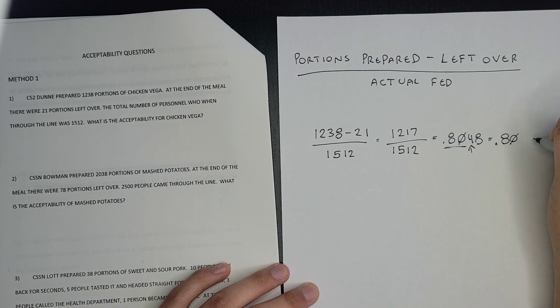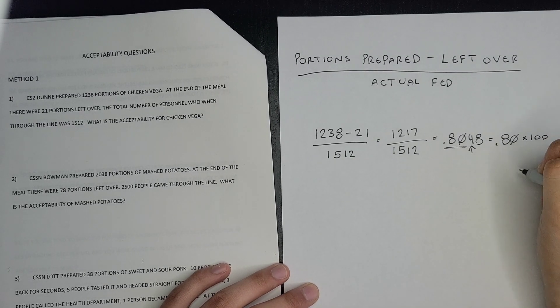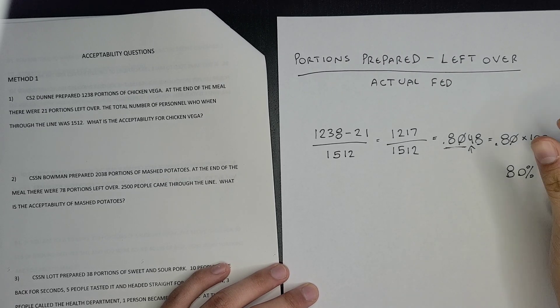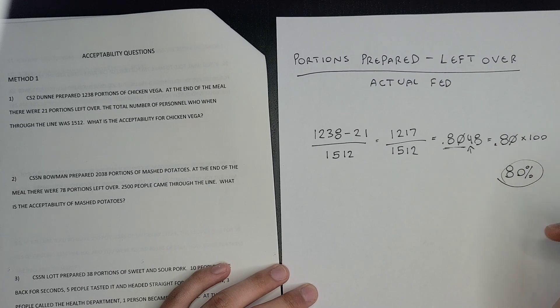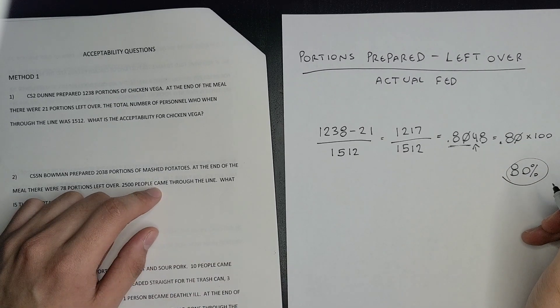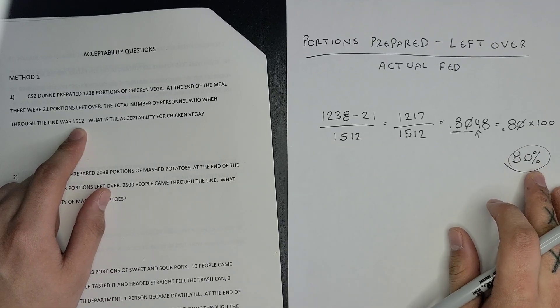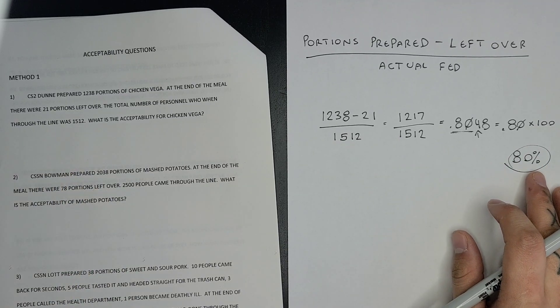Since acceptability is always a percentage, you're going to multiply this by 100 to get your percentage, which is 80 percent. That would be your final answer. Out of the one thousand five hundred and twelve people that went through the line, eighty percent of the people got the chicken.